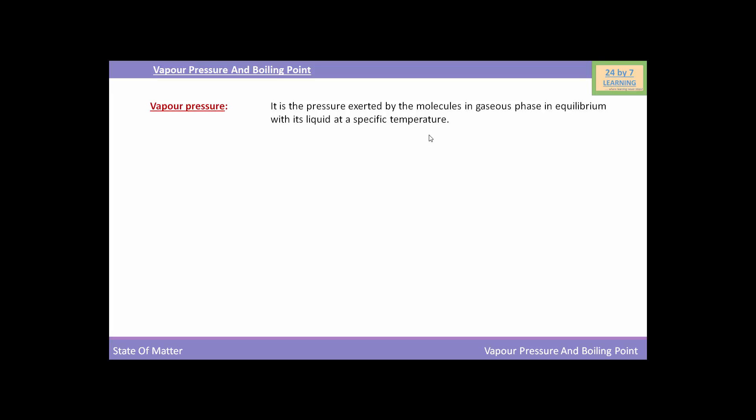Students, this definition sounds complicated, so let me make it easy for you. If we take a liquid and allow it to evaporate in a closed vessel, the molecules escaping from the liquid surface do not leave the container. These are collected in a vapour state above the surface of the liquid.